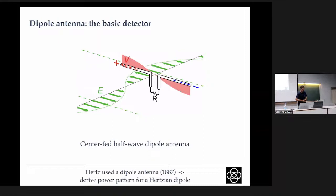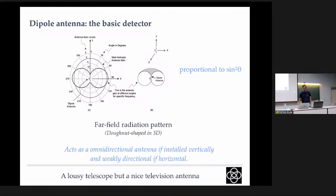At the most basic level, a radio detector is a dipole antenna — the same type Hertz used in 1887. This is a half-wavelength dipole antenna, and its far-field radiation pattern in polar coordinates is donut-shaped along its orientation. If installed vertically, it acts as an omni-directional antenna in the horizontal plane, with no response along the vertical axis. A large angular region receives radiation, but it is very weakly directional.